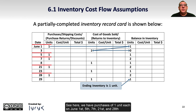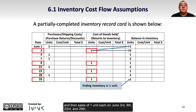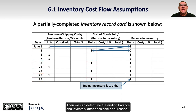We have purchases of one unit each on June 1st, 5th, 7th, 21st, and 28th, and then sales of one unit each on June 3rd, 8th, 23rd, and 29th. Then we can determine the ending balance in inventory after each sale or purchase.